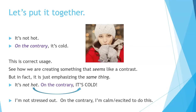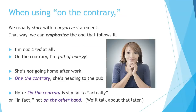It doesn't have to be exactly the same thing — it can be something similar. For example: 'I'm not stressed out. On the contrary, I'm calm' or 'I'm excited to do this.' When using 'on the contrary,' we usually start with a negative statement so we can emphasize the one that follows. For example: 'I'm not tired at all. On the contrary, I'm full of energy.' Or: 'She's not going home after work. On the contrary, she's heading to the pub.'